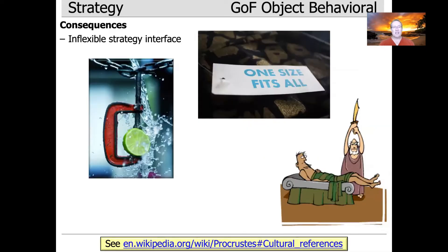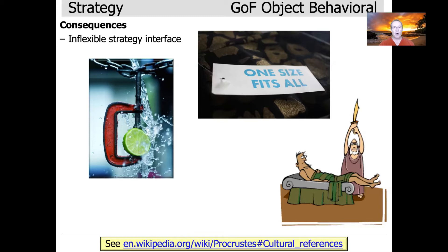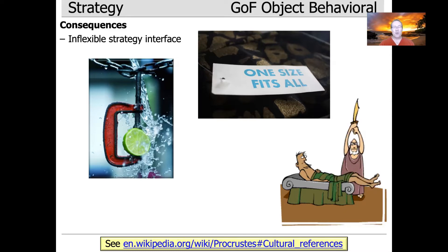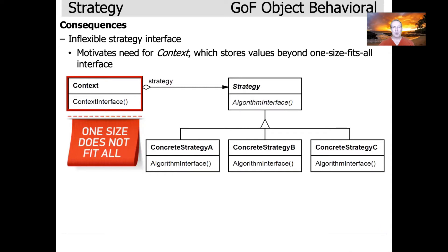Another potential downside is an inflexible strategy interface — the same kind of problem we talked about with Bridge, where you end up with a one-size-fits-all solution that forces you into a Procrustean bed of uniformity. You can apply other patterns like Adapter, or you can use context to store additional information that goes above and beyond what's available through the one-size-fits-all interface. That's a good reason for using context.